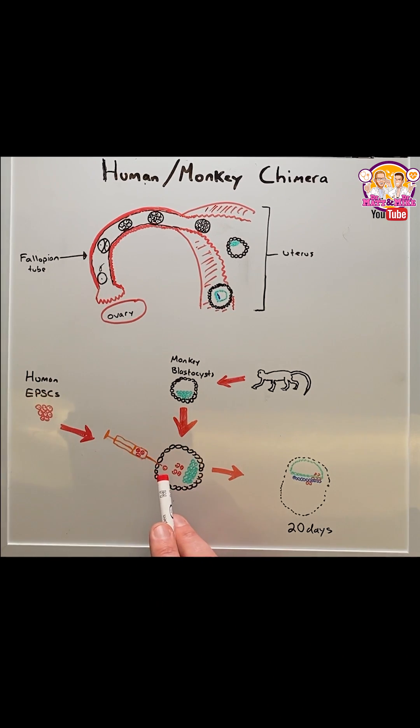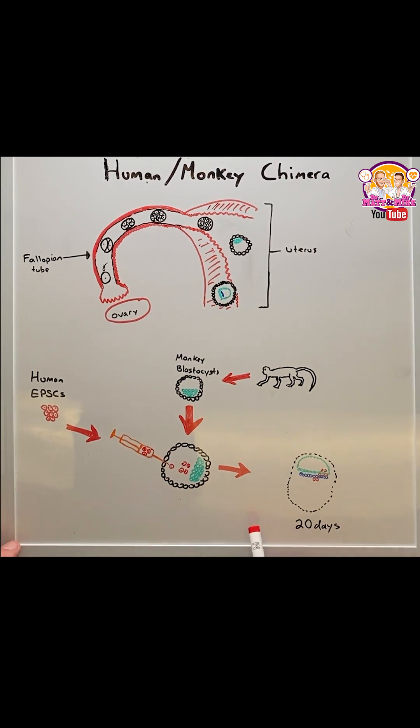Here they added twenty-five of these stem cells into the blastocysts of the monkeys and then allowed it to culture for twenty days.